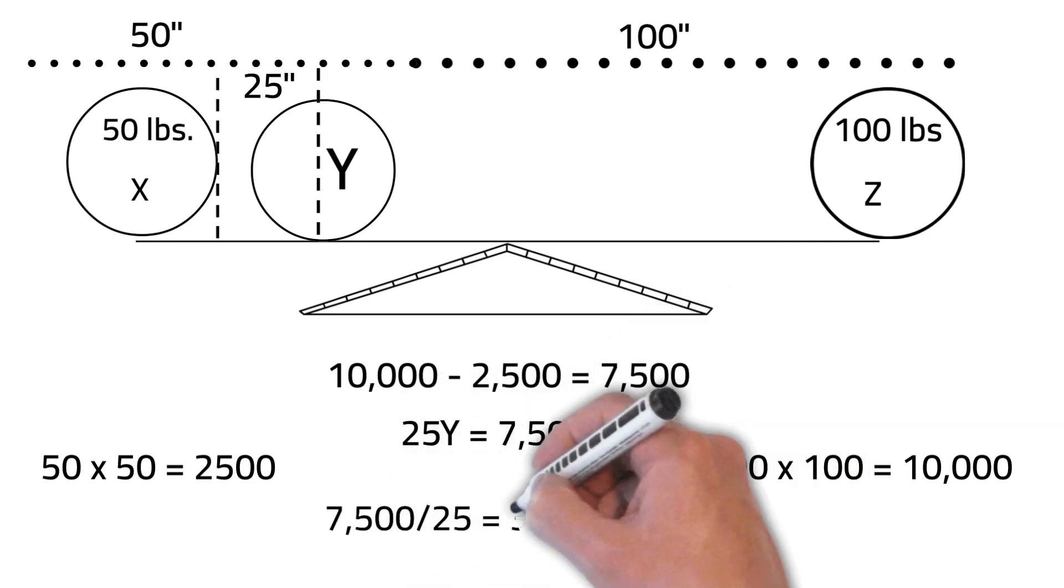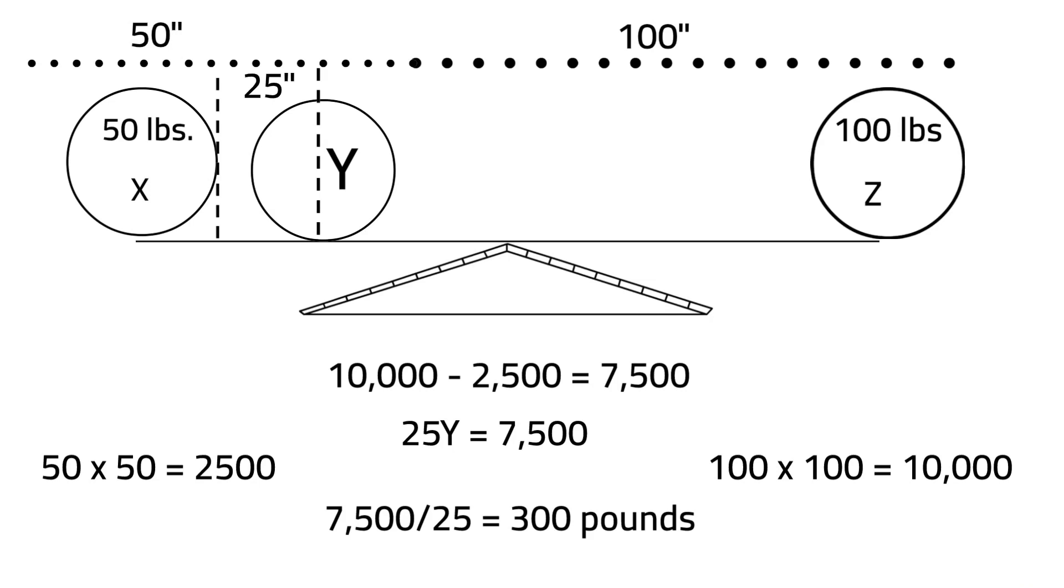We would then divide 7,500 by 25 since that is the length of point Y from the center of gravity. 7,500 divided by 25 equals 300. Thus, we would need to place 300 pounds at point Y to balance the plank.